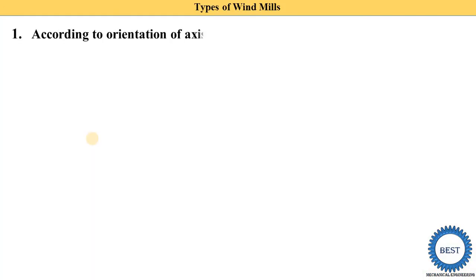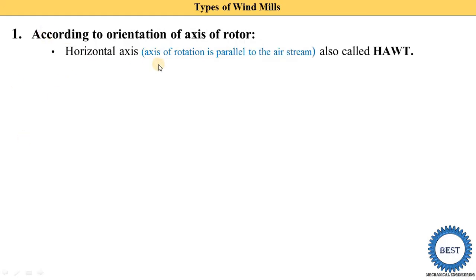The first category is according to orientation of the axis of the rotor, meaning the shaft of the windmill is either horizontal or vertical. If the shaft is horizontal, it is called a horizontal axis windmill, also written as HAWT — H means horizontal, A means axis, W means wind, and T means turbine. The axis of rotation is parallel to the air stream.